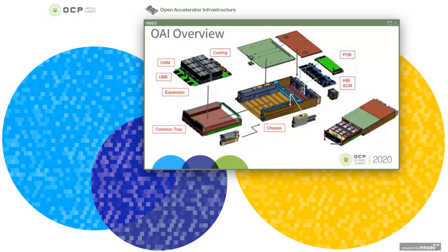We have also recently released a Common Tray specification, which uses a sheet metal tray with front panel, ejectors, and slide rails. This 3U tray, shown in the lower left, is modular and can fit any Universal Baseboard, which in turn can fit any 8 OAMs. It is also flexible, allowing for multiple options of front panels should one decide to change or move the IO.